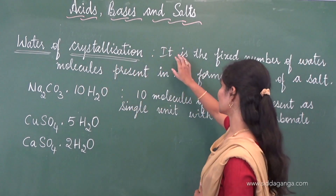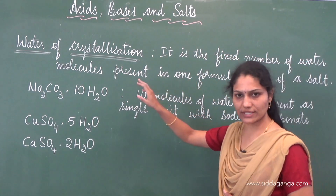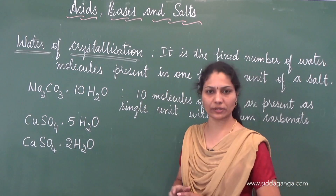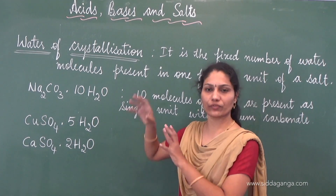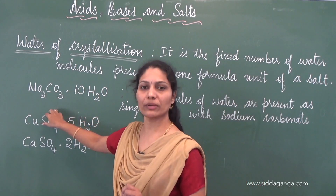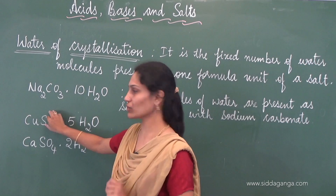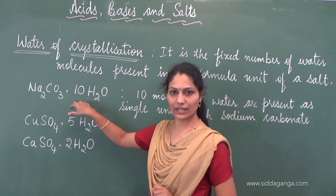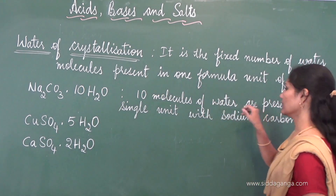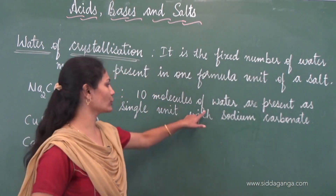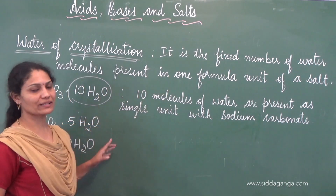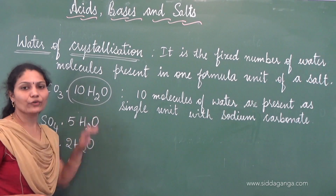Water of crystallization is nothing but the fixed number of water molecules — the fixed number of water molecules present in one formula unit of a given salt. For a particular salt, the water of crystallization is particular. In this case, for washing soda, the water of crystallization turns out to be 10H2O. This means 10 molecules of water are present as a single unit with sodium carbonate — so many molecules of water for a given salt.